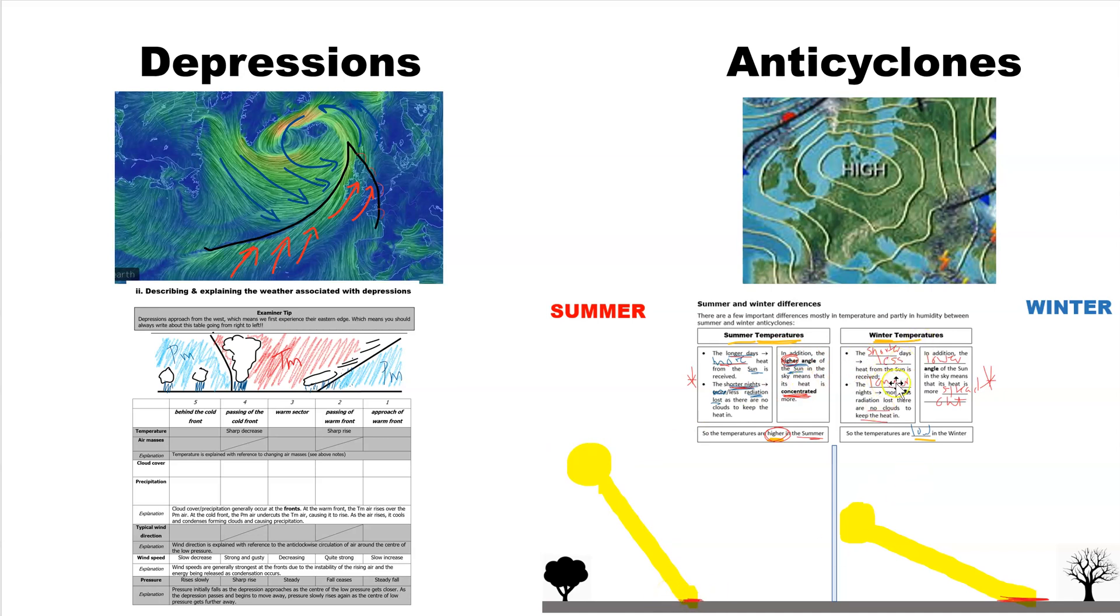The opposite is the case for the winter. You've got shorter days, less heat is received. Longer nights with no clouds, lots of heat escapes. And secondly, the sun is lower in the sky. It approaches at a lower angle, and therefore the heat energy is spread out a little bit more.